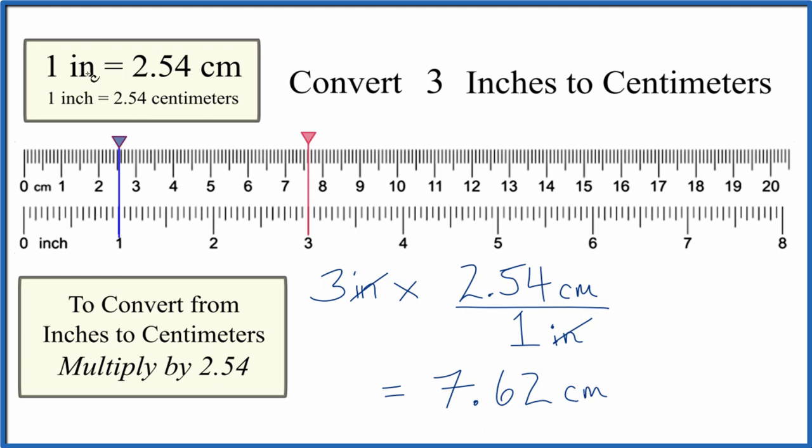Key to remember: one inch is 2.54 centimeters, and when we convert from inches to centimeters, we just multiply by 2.54.